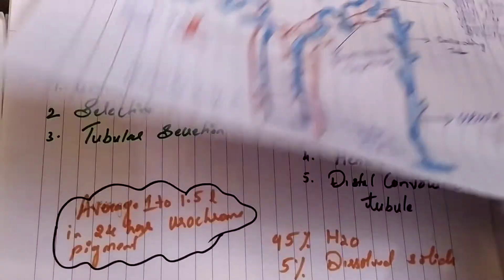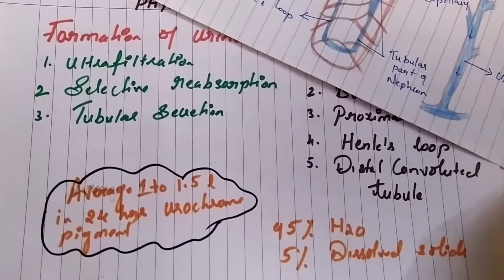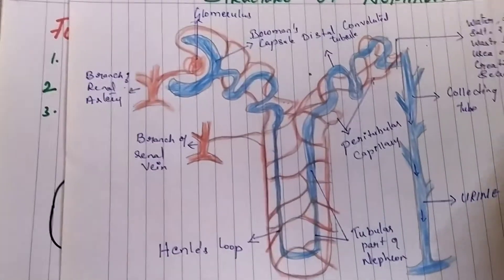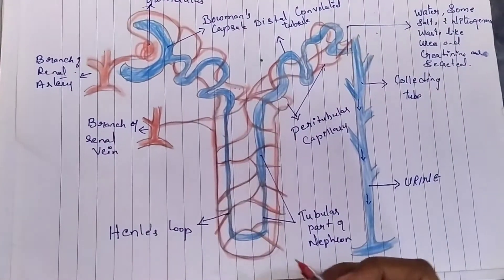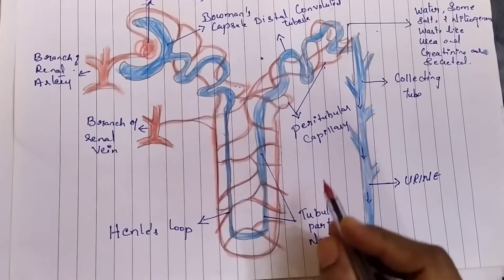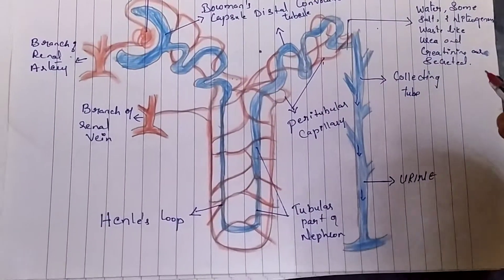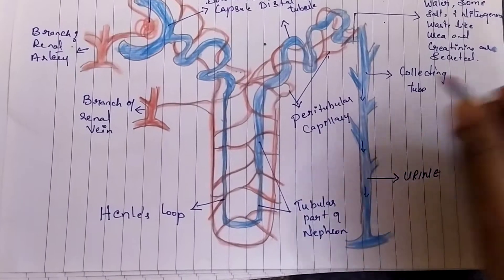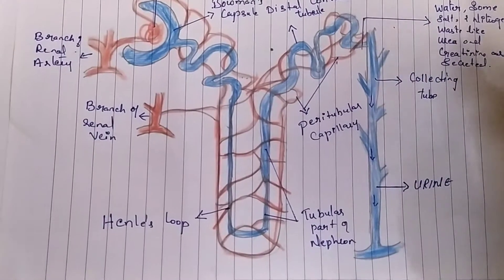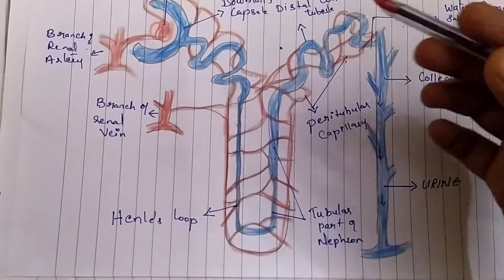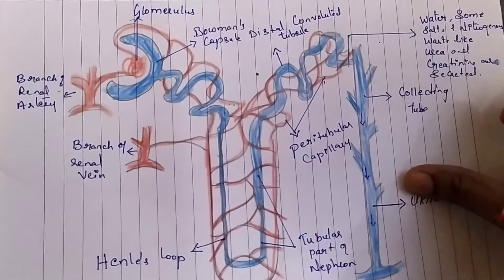The third step is tubular secretion. Tubular secretion is nothing but the excretory products left in the blood capillaries being excreted out into the urine through the uriniferous tubules by diffusion. Creatinine and potassium are excreted from the blood into the nephric filtrate. This helps in the overall physiology or formation of urine, from ultra filtration and reabsorption of water to the removal of excess products not necessary for the body.